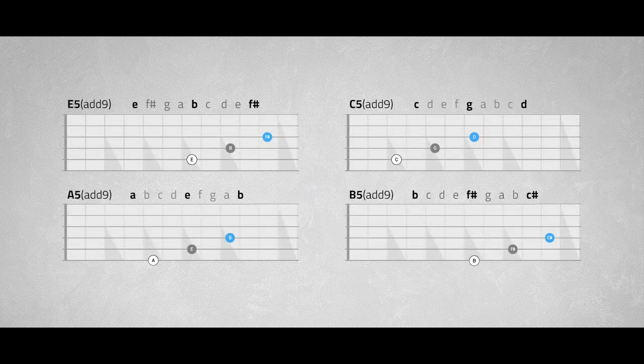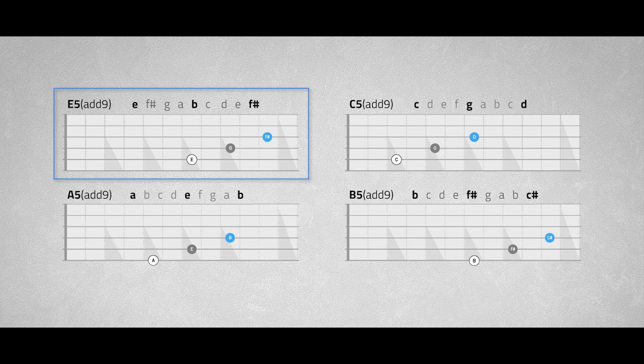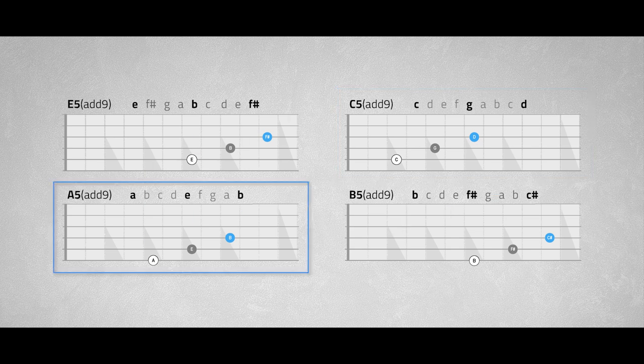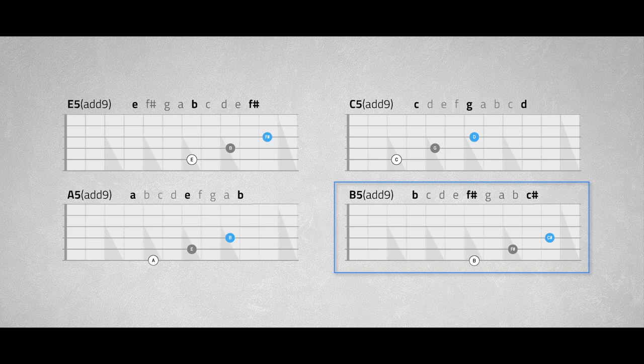E5 added 9 or E sus2 containing the notes E, B, and F-sharp. C5 added 9 or C sus2 containing the notes C, G, and D. A5 added 9, and B sus2 containing the notes B, F-sharp, and C-sharp.